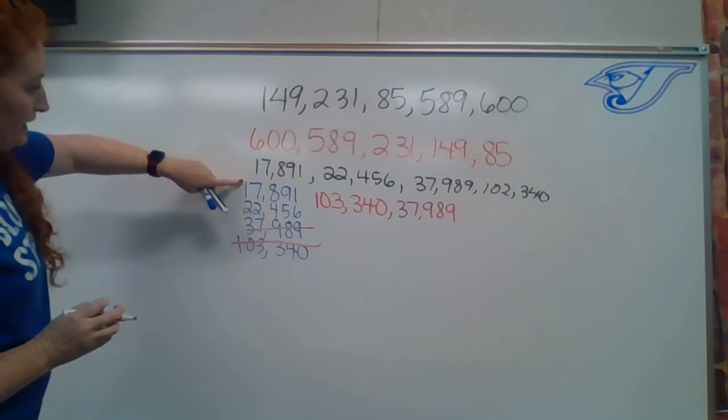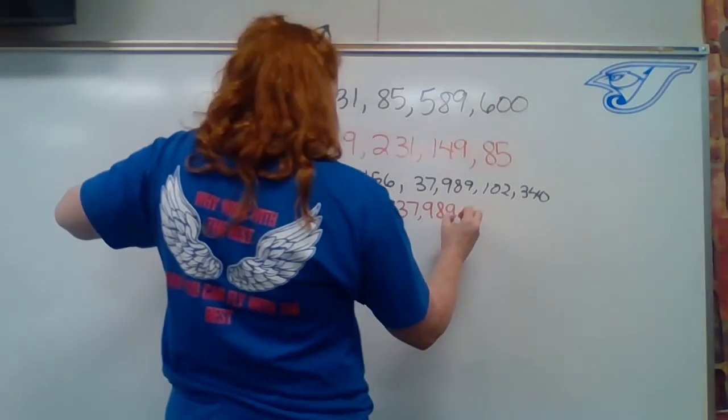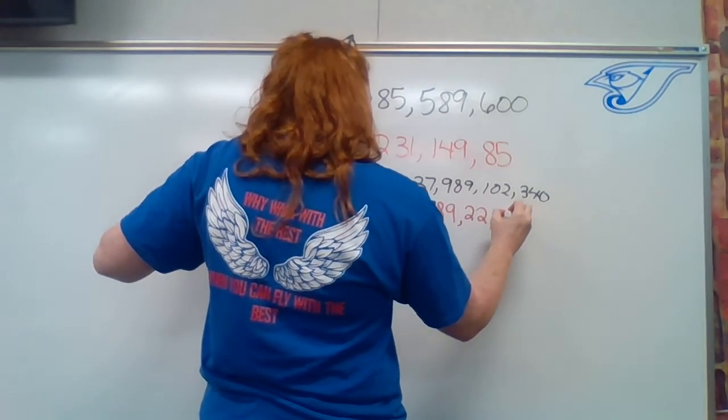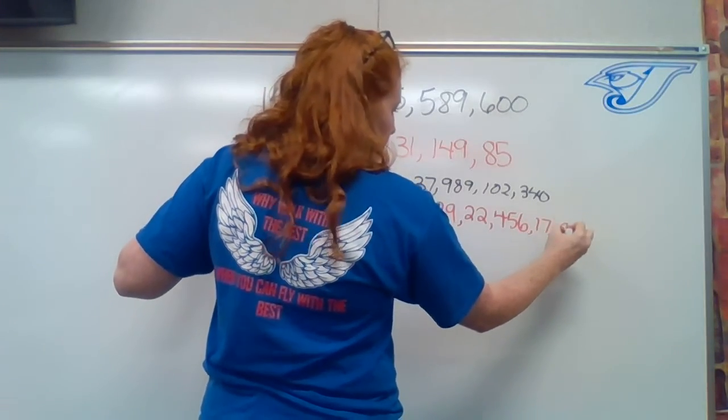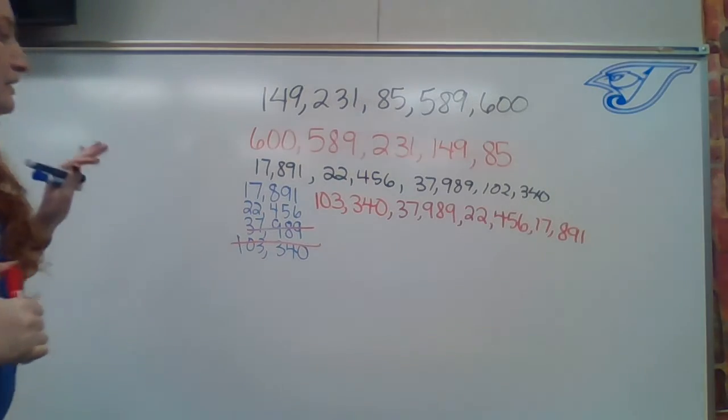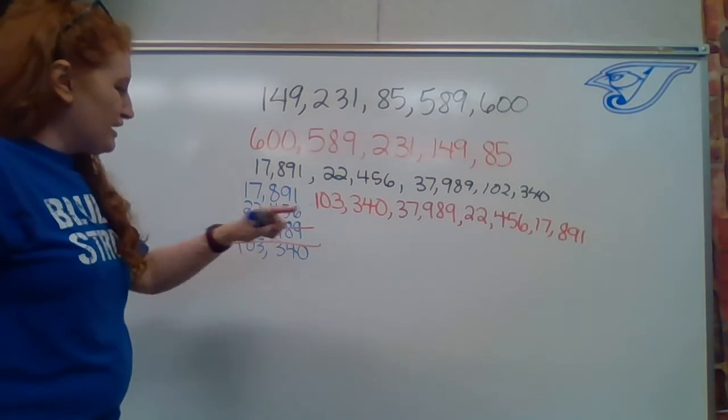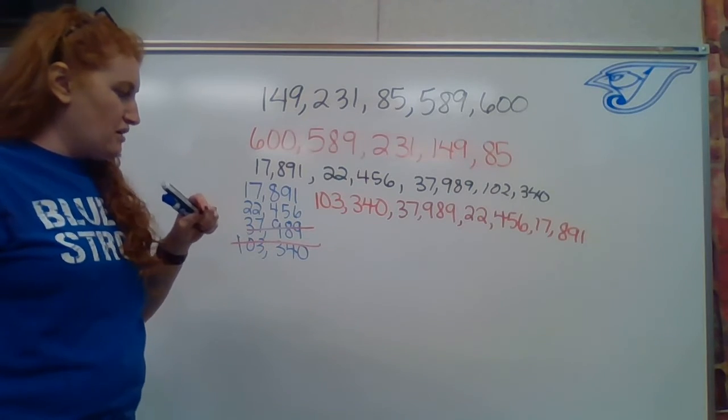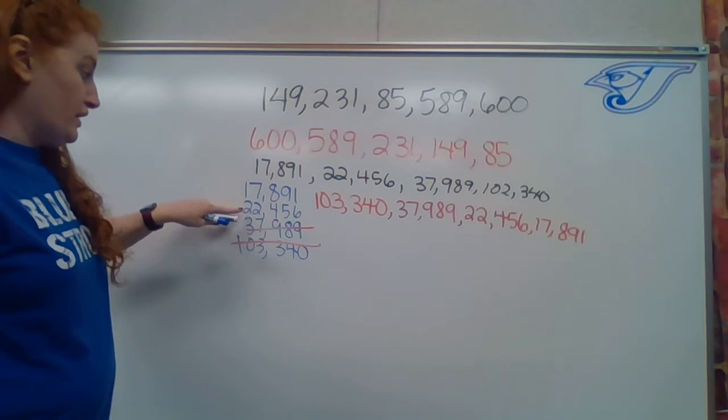Then again, we look in the 10,000th place and we see this one is bigger. And our last number, 17,891. So when you ask yourself, why is 22,000 bigger than 17,891? That's because the digit in its 10,000th place is bigger than one. Two is a bigger digit than one.